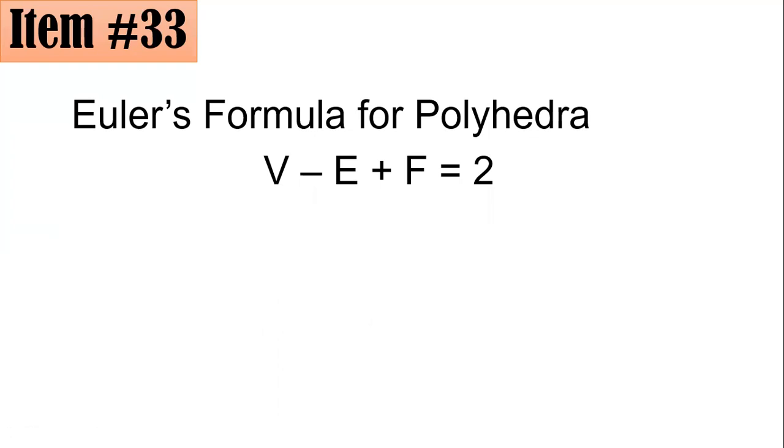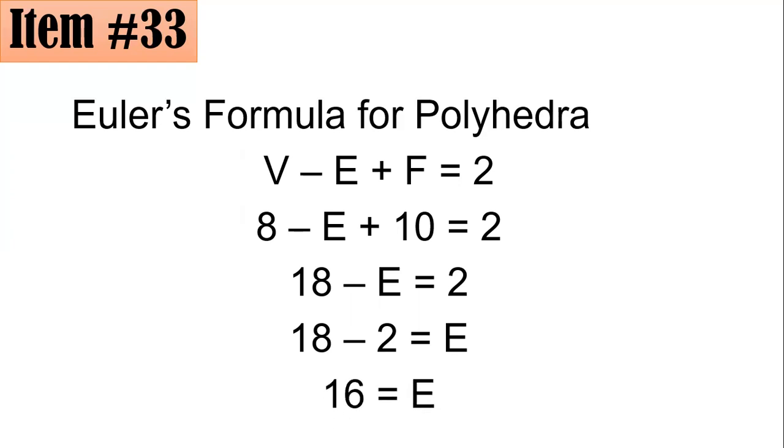Substituting the given, we have 8 - E + 10 = 2. The 8 + 10 could be simplified as 18. So you have 18 - E = 2. Solving gives 18 - 2 = E, or that's 16 as the number of edges, letter A. I hope you got it right.